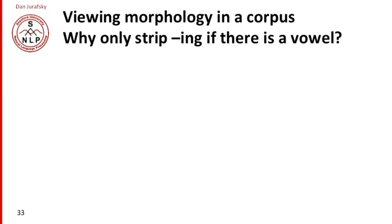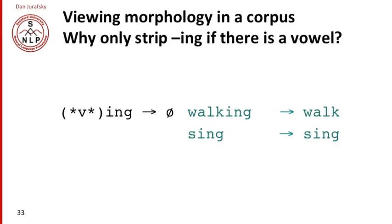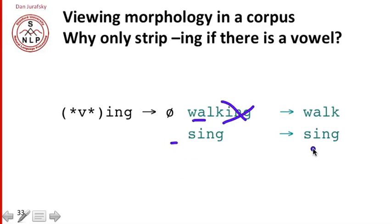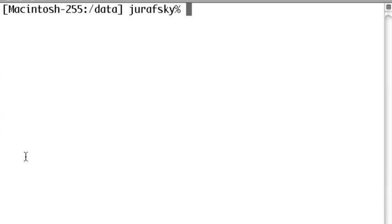Let's look again at the rule that strips 'ing' and practice using Unix tools to look at morphology in a corpus. Remember why we strip ings only if there's a vowel preceding the ing. In a word like 'walking,' we have a vowel before the ing, so it's okay to remove the ing. In a word like 'sing,' there are no letters at all before the 's' — there are no previous vowels — and so the rule doesn't apply. Let's do a search for words ending in ing in Shakespeare.